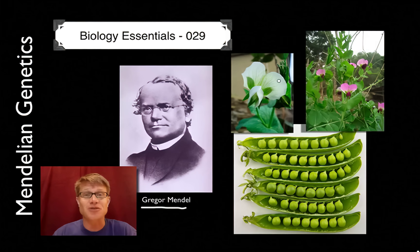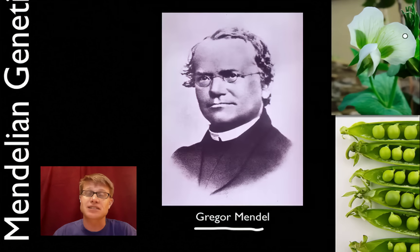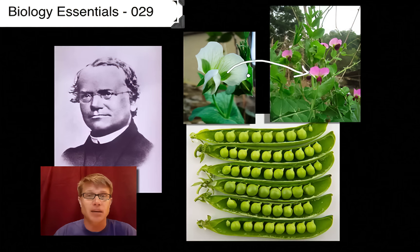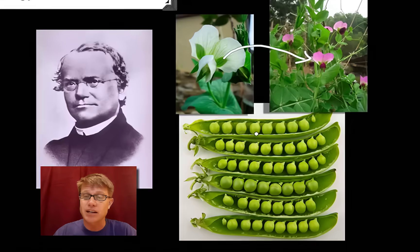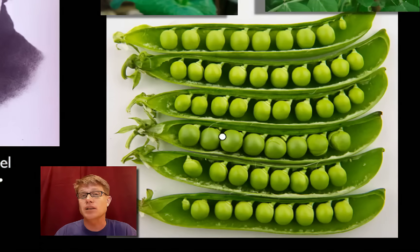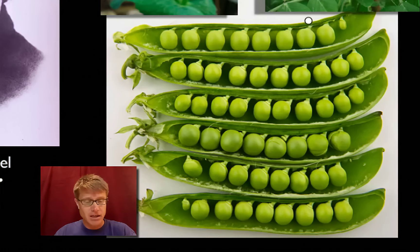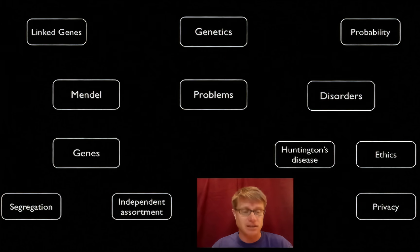If they could have gotten together, those two theories — when they finally came together as modern synthesis — is really powerful. Unfortunately he dies in obscurity. But this is what he did: he was crossing pea plants. He can take one pea plant and use a paintbrush to transfer pollen from one to another, so you know who the parents are. He would then create offspring as a result of that. Peas are great because they have a number of different characteristics, and you can make a lot of them really quickly. In a pod, each of these peas is an actual new organism, so you can plant those and see how they grow. And so he figured out a lot of genetics as a result of that.